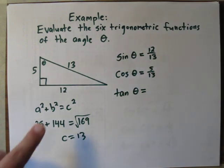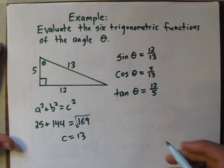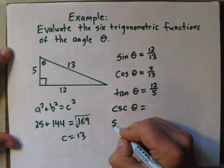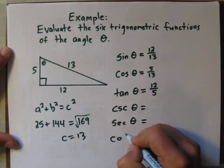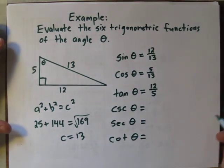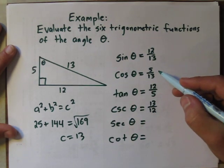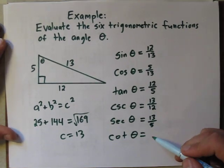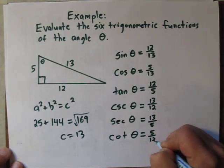Tangent theta is opposite over adjacent, so we have 12 over 5. Using the reciprocals of our first three trigonometric functions, we can evaluate the second three. Cosecant is the reciprocal of sine, so cosecant of theta is 13 over 12. Secant of theta is the reciprocal of cosine, so we'd have 13 over 5. And cotangent is the reciprocal of tangent, so we'd have 5 over 12. And we've evaluated all six trigonometric functions for angle theta in this triangle.